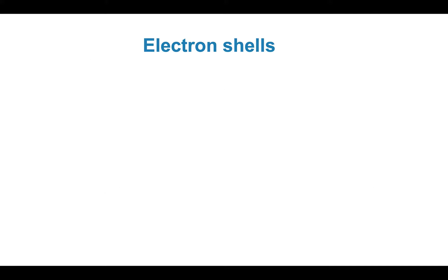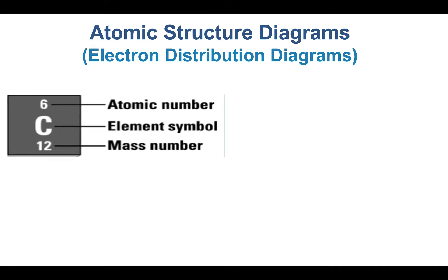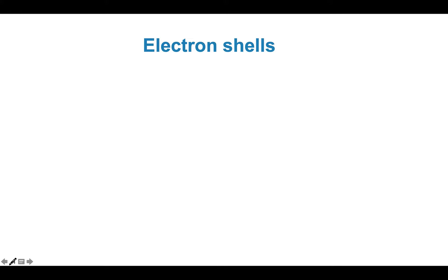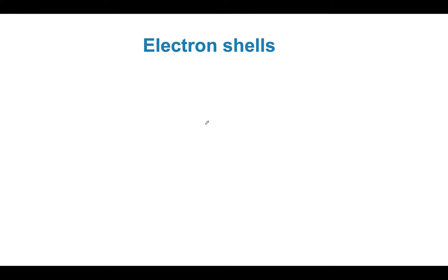Let's think of a carbon atom. With carbon, it's going to have an atomic number of 6.